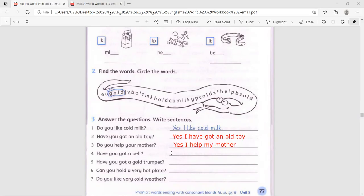Have you got a belt? Yes, I have got a belt. Number five, have you got a gold trumpet? We can say no, I haven't. Haven't got a gold trumpet.